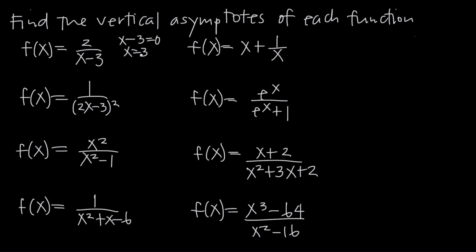And of course, that makes sense if you plug it back in. If you plug in x equals 3, we get 3 minus 3, which is 0. You'd have 2 over 0 — we can't have 0 in the denominator, which means the function is undefined at that point, and we have a vertical asymptote. So x equals 3 is our vertical asymptote for this function, which means the domain of this function is all real numbers except x equals 3, or all x not equal to 3.